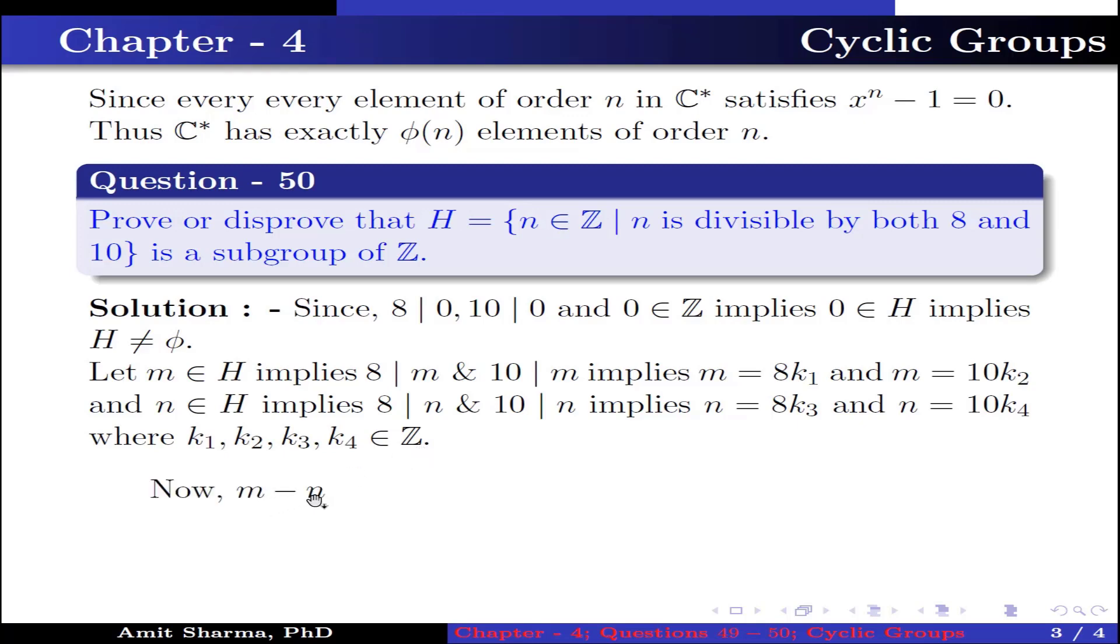m - n equals 8k₁ - 8k₃, which equals 8(k₁ - k₃). Since k₁ and k₃ are integers, k₁ - k₃ also belongs to Z. This implies 8 divides m - n, which implies m - n belongs to H.